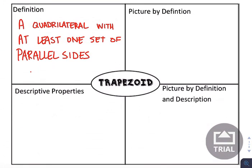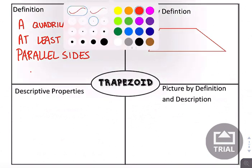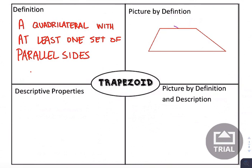Moving on to trapezoid — a trapezoid is a quadrilateral with at least one set of parallel sides. In terms of what the picture can look like, not all sides are parallel, but you have at least one set that happens to be. In this particular case, the parallels will be top and bottom, as we're marking here with these chevrons. So we have ABCD as a trapezoid with one set of parallel sides.